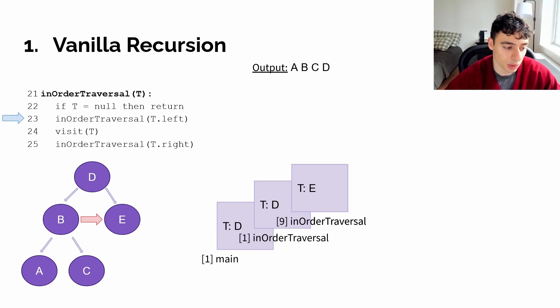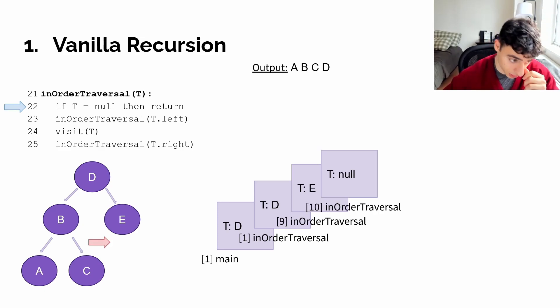The 9th frame will then add two more, one for the left child at line 23, which is null. Since it's null, it will be popped off without visiting. Then it will visit E, move right, adding our 11th frame to the stack. This will terminate at line 22.